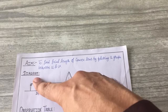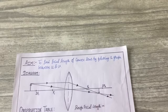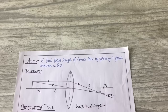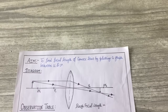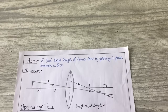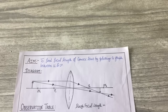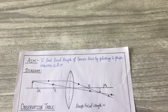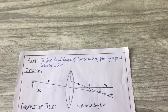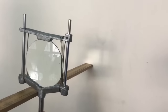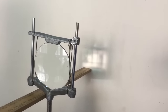Using that knowledge we will fill our observation table, and before performing the experiment we will find the rough focal length. For that, I will try to focus the image of a distant tree on a wall, and the distance between that wall and the convex lens will be taken as the rough focal length.